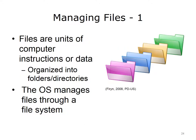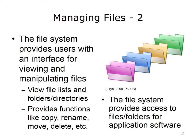A file is a set of computer instructions or data treated by a computer as a single unit. Files are organized into folders or directories. The OS uses a file system to control how these files are stored on disk in secondary storage. The file system provides the user with an interface for viewing and manipulating files. Some of the operations facilitated by the file system are listing, viewing, copying, renaming, moving, and deleting files and directories. These functions can be accessed from a GUI or command line interface within an OS. Also, the file system allows application software to access files and folders. We will return to the file system and file management in the next lecture.